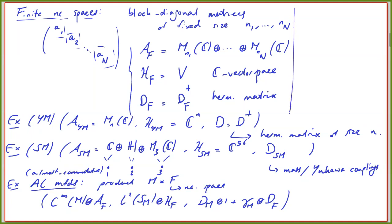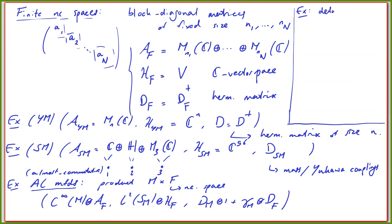If you look at more serious non-commutativity, one also gets an interesting example. Rather than a commutative manifold with non-commutativity at each point, you could also try to deform the manifold itself and introduce deformed products on C∞(M). On C∞(M) we normally take pointwise products, but we deform this into a star product f ⋆_θ g.